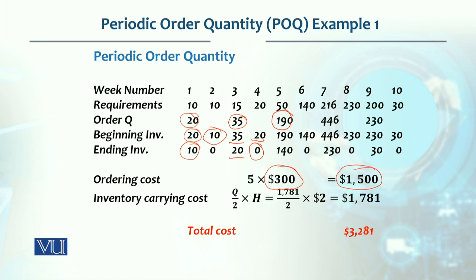For inventory carrying cost, we calculate average inventory by summing beginning and ending inventory. We have a total of 1,781 units, which divided by 2 and multiplied by $2 gives $1,781. The total cost for periodic order quantity is $3,281.